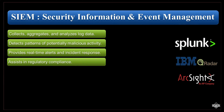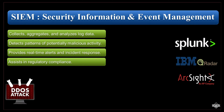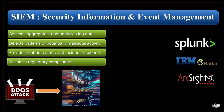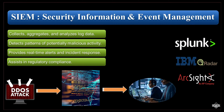To understand how a SIEM works, consider a scenario where a SIEM system detects multiple failed login attempts from a specific IP address outside of normal business hours. The SIEM tool correlates this with an increase in data transfer from the same IP address, indicating a potential brute force attack. The SIEM system generates an alert for the security team to investigate, helping to prevent a security breach.